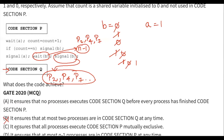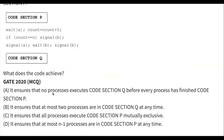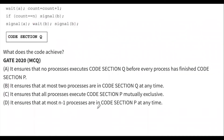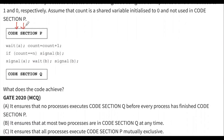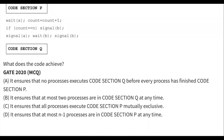Option C says it ensures that all processes execute code section P mutually exclusively. That's not right — all processes can enter the critical section because there is no condition stopping them, so mutual exclusion is not guaranteed in code section P. Option D says at most N-1 processes are in code section P at any time — but all N processes can be inside code section P, nothing is stopping them. So options C and D are both wrong. Option A is the only correct answer.